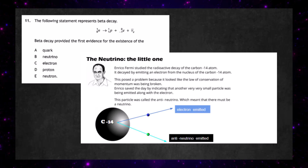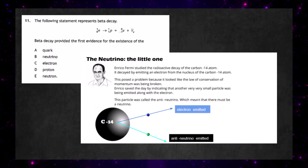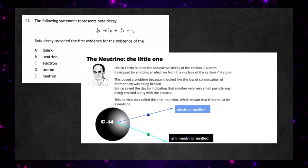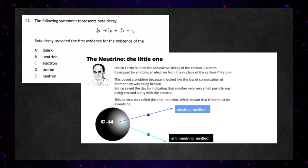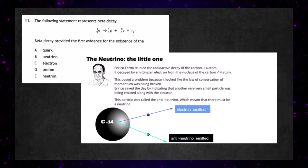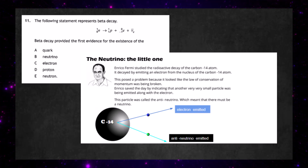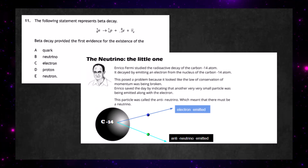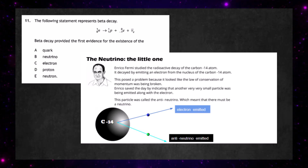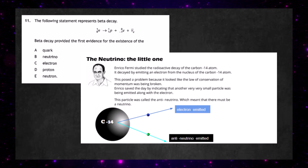Enrico Fermi studied the radioactive decay of a carbon-14 atom. It decayed by emitting an electron from the nucleus — that's beta decay. This posed a problem because it looked like the law of conservation of momentum was being broken. Enrico Fermi saved the day by indicating that another very small particle was being emitted along with the electron.